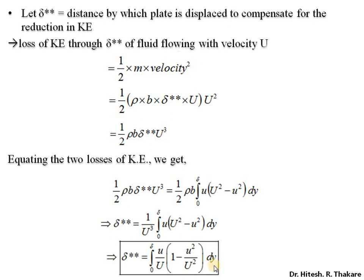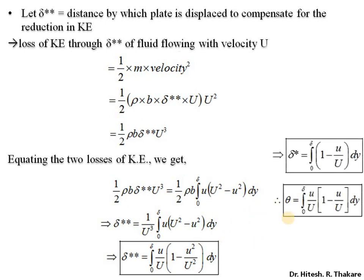Observing all three thicknesses in parallel, their formulae are very similar to each other: displacement thickness delta star, momentum thickness theta, and energy thickness delta double star. Their concepts and derivations follow the same ground. We only need to keep in mind which quantity is of importance: for displacement thickness it is mass flow rate, for momentum thickness it is momentum loss, and for energy thickness it is the loss of kinetic energy. If we keep these things in mind, all three derivations can be done in a parallel way without needing separate preparation for each.